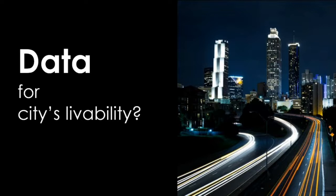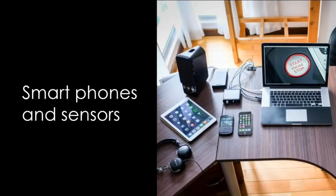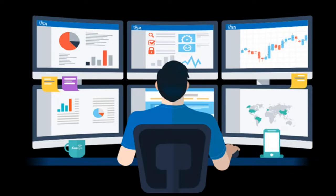Smart cities put data and digital technology to work to make better decisions and improve quality of life. There are three layers of getting data from cities. The first is the technology base, which includes a critical mass of smartphones and sensors connected by high-speed communication networks. The second layer consists of specific applications translating raw data into alerts — this is where technology providers and app developers come in. The third layer is usage by cities, companies and the public. Many applications succeed only if they are widely adopted and manage to change behaviors, encouraging people to use transit, change routes or use less energy and water.